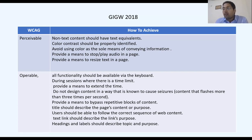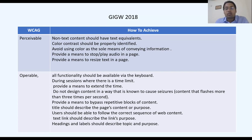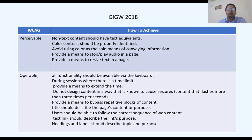The second principle is Operable — the user must be able to operate the interface, and it cannot require interaction the user cannot perform. All interface elements must be operable either by keyboard or by mouse, not by a device like a joystick that most people don't have.